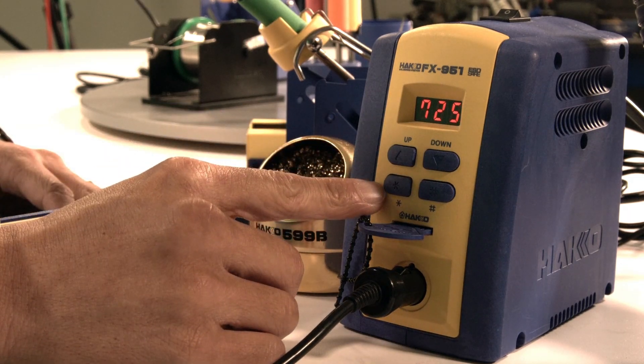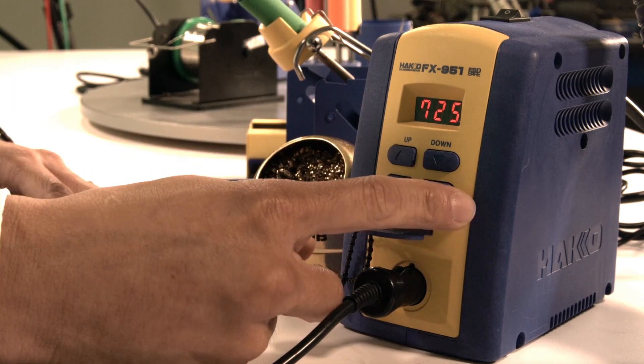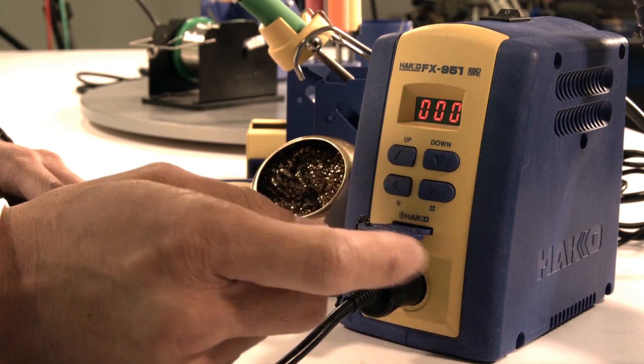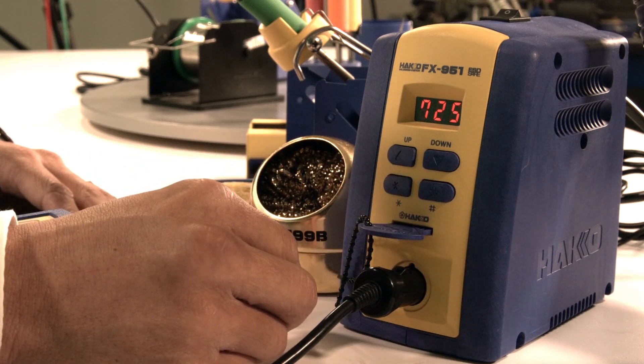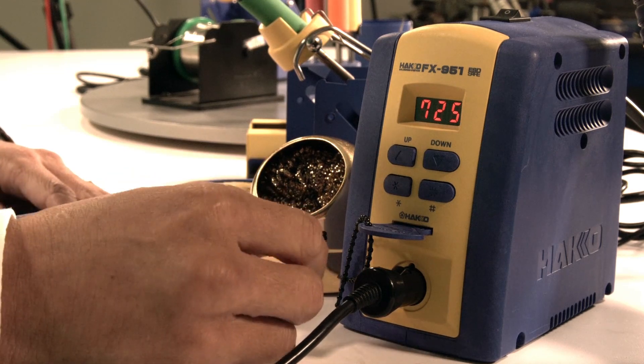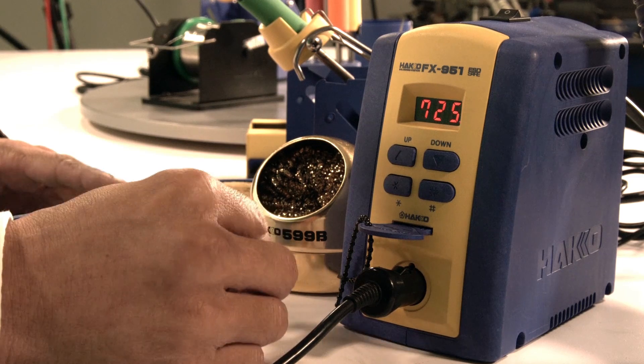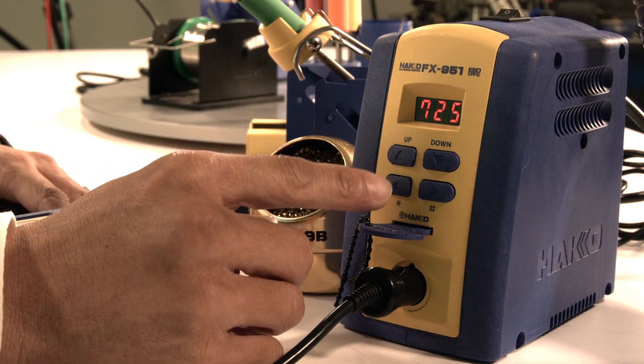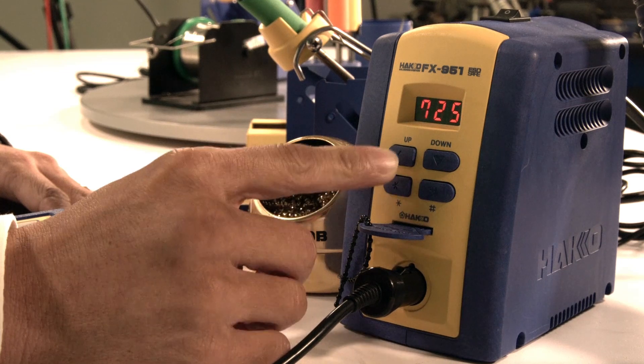Hit the star button to confirm, over to the ones digit, use the arrows to go from 0 to 5, hit star to confirm, and that's it. Now I've changed the set temperature from 750 to 725. The bottom right button shows your offset value: 0, 0, 0. What is an offset value?